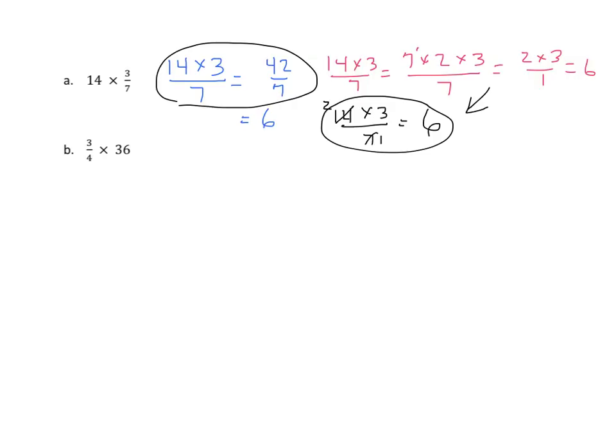So we have 3 fourths times 36. So I have 3 times 36 over 4. And now I multiply that. I get 108. You can see that this is a pretty big number. Not easy to work with. And most of us will have to probably divide that out. And we get a 27.